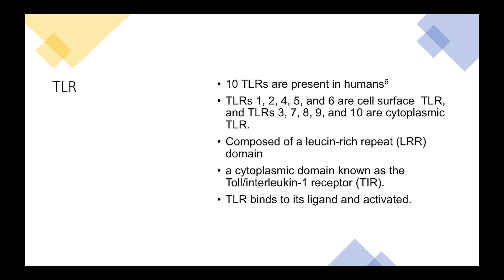Now let's learn about TLRs or toll-like receptors. There are mainly 10 TLRs present in humans. TLR 1, 2, 4, 5, and 6 are present on the cell surface, while TLR 3, 7, 8, 9, and 10 are present on the cytoplasm. They are mainly composed of leucine-rich repeat or LRR domains and also have a cytoplasmic domain known as the toll-interleukin-1 receptor or TIR domain, which generally binds to its ligand and gets activated.